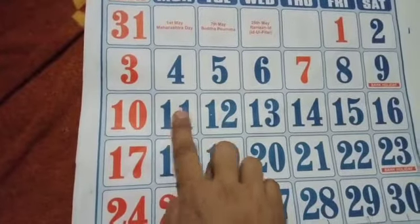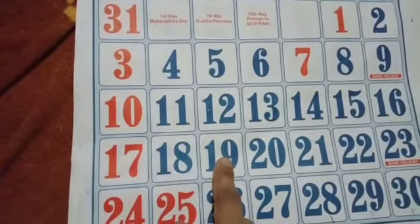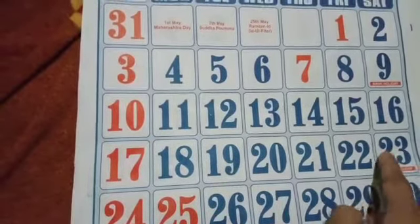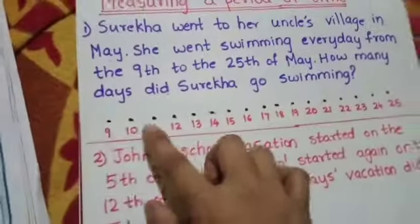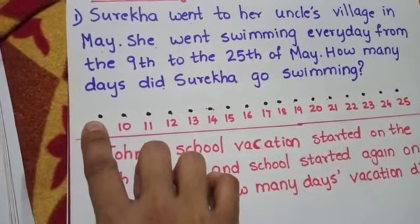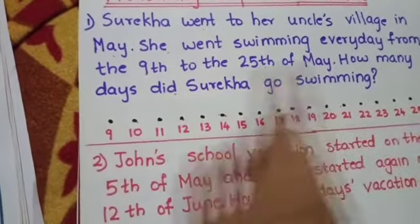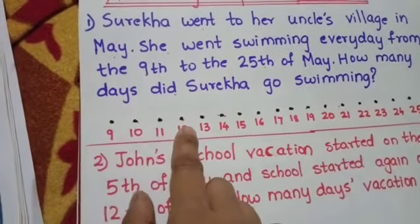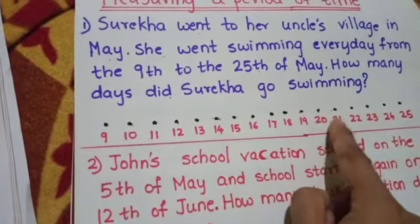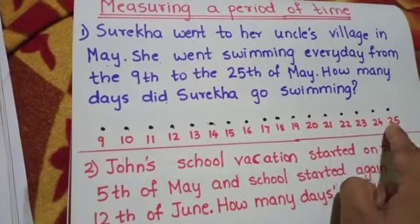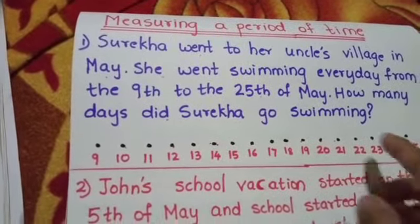So let us count: 1, 2, 3, 4, 5, 6, 7, 8, 9, 10, 11, 12, 13, 14, 15, 16, 17. How many days? 17 days. So how many days did she go for swimming? Surekha went total 17 days for swimming.